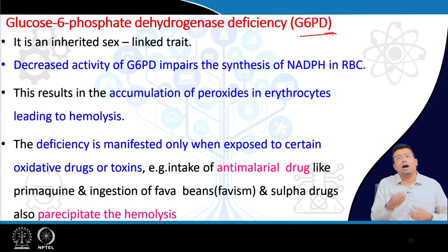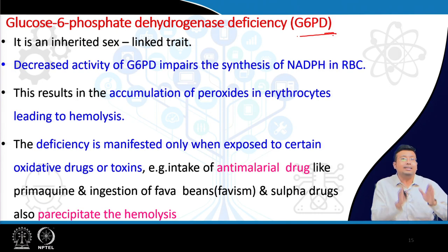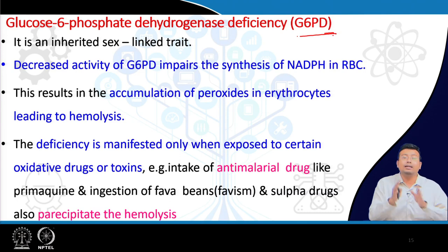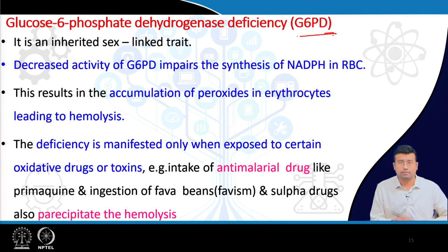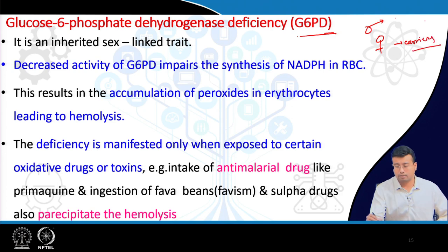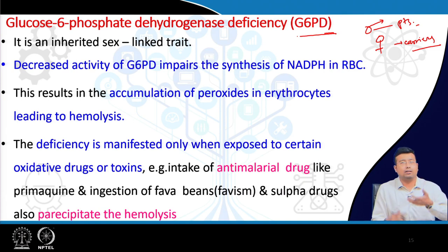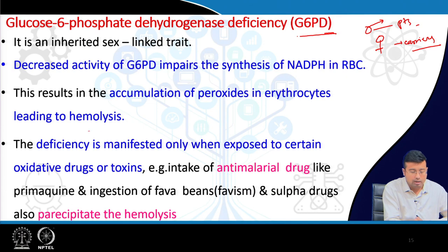G6PD deficiency is a sex-linked trait. It is an X-linked recessive disorder, so it is always dormant in females who have two X chromosomes. In males with only one X chromosome, it can be expressed. All G6PD-deficient cases are males; females are carriers. Decreased G6PD impairs the synthesis of NADPH in RBCs, leading to destruction of the RBC membrane and hemolysis.